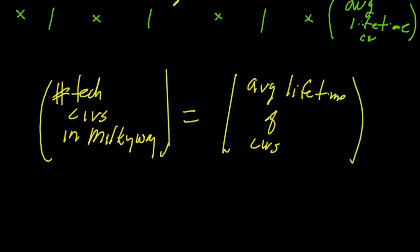So for example, if this number is 1,000, then we would expect there to be 1,000. So if this is 1,000 years, if our civilization would last that long, then we would expect there to be about 1,000 currently in the Milky Way galaxy.